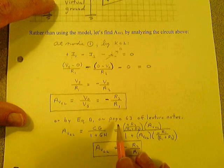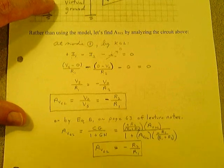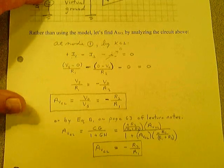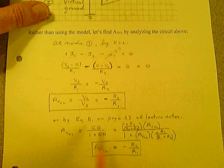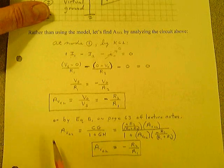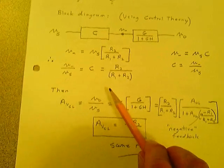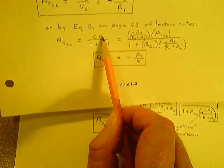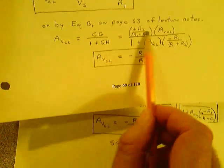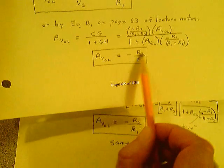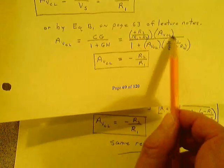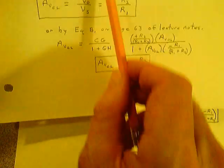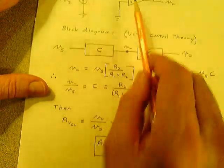You can also use the control theory equation from page 63 of the lecture notes. Finding C, G, and H and plugging them in gives you the same gain. Most engineers find this approach easier than going through the full analysis. Here's the block diagram using control theory.